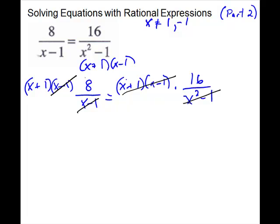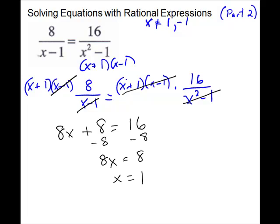What we have left on the left is 8 times (x plus 1), which gives 8x plus 8. On the right side, all we have left is 16. Subtract 8 from both sides to get 8x equals 8, then divide by 8 to get x equals 1. But we threw 1 away, so there is no solution. I wanted you to see the difference — this second method is my preferred approach, but either works for this problem.